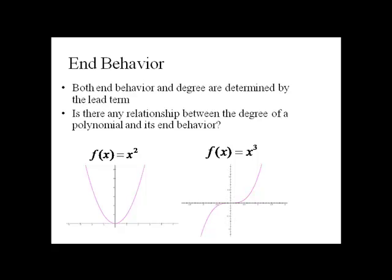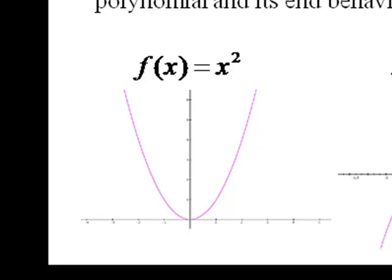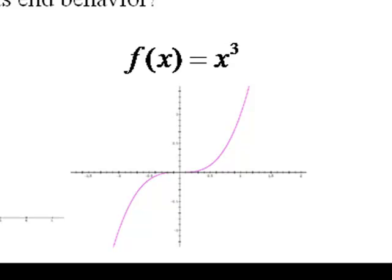Just a couple basic examples here, but notice that when the power is even, both ends go the same direction. They'll open upwards if the leading term is positive, and downwards if it's negative. When the exponent is odd, the ends go in opposite directions.